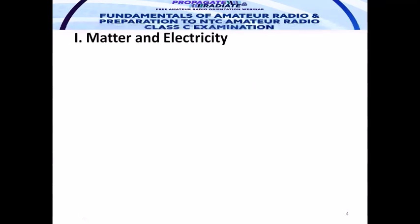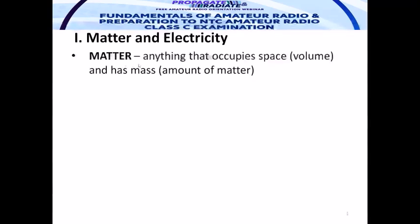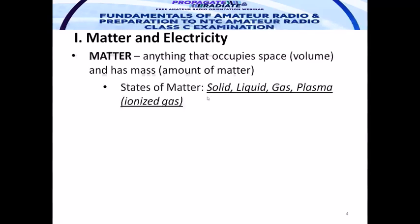First part: matter and electricity. Matter — the classic definition — is anything that occupies space (volume) and has mass. The amount of matter is mass; the space of the matter is volume. States of matter: solid, liquid, gas, and the fourth state, plasma, known as ionized gas.